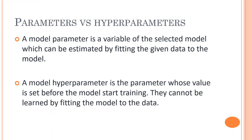What are parameters? A model parameter is a variable of the selected model which we cannot manually select, but it can be estimated by fitting given data to the model. Basically, we have our slope, that is m, while we were fitting our linear regression model. We found out that we have m and we have our intercept — these are the model parameters.